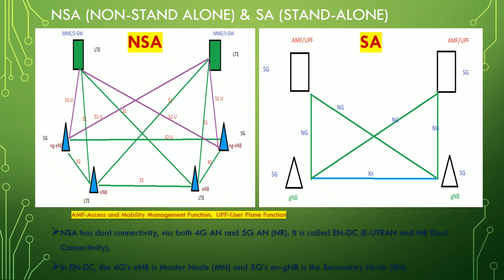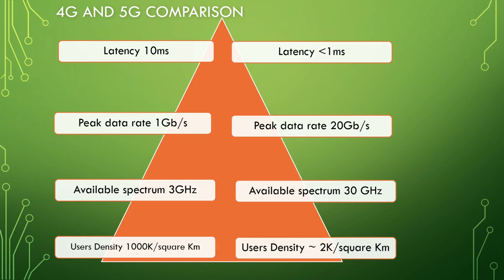Now let's do a basic comparison of 4G and 5G. For latency: in LTE it is 10ms, while in 5G it is less than 1ms. Peak data rate in LTE is 1 Gbps, and in 5G it is 20 Gbps. Available spectrum in LTE is up to 3 GHz, while in 5G we have a huge spectrum available — up to 30 GHz. For user density, LTE was around 1,000 devices per square kilometer, while in 5G we have approximately 1 million per square kilometer.